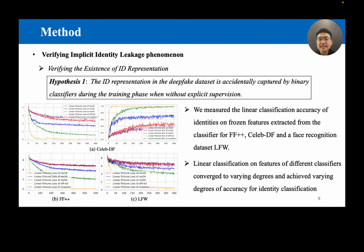For verifying implicit identity leakage phenomena, we firstly performed the ID linear classification experiment to verify the existence of ID representation. Specifically, we measured the linear classification accuracy of identities on frozen features extracted from deepfake detection binary classifiers for FF++, CelebDF, and the face recognition dataset LFW. This figure shows that linear classification on features of different binary classifiers converged to varying degrees and achieved varying degrees of accuracy for identity classification. Such results indicate that deepfake detectors accidentally learned the ID representation of images, even without explicit supervision in particular.